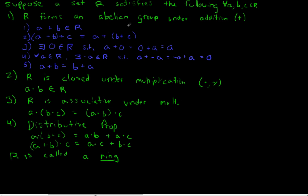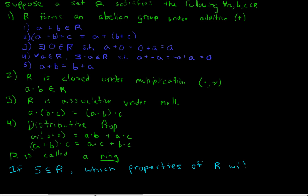Here I have the definition of a ring that I copied from the first video in this series. My question in this video is: if R is a ring and S is some arbitrary subset of R, which properties of R will be automatically inherited by S?